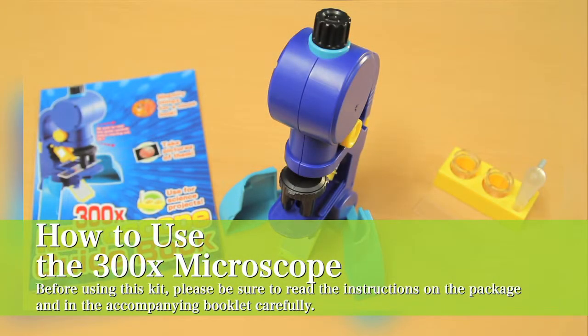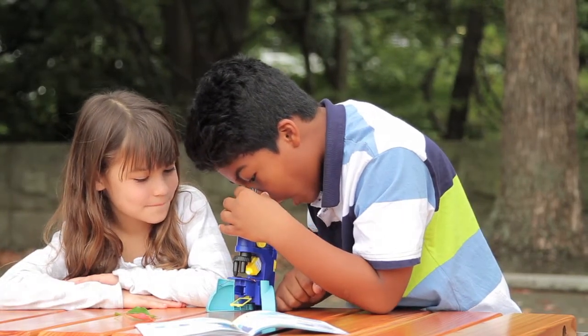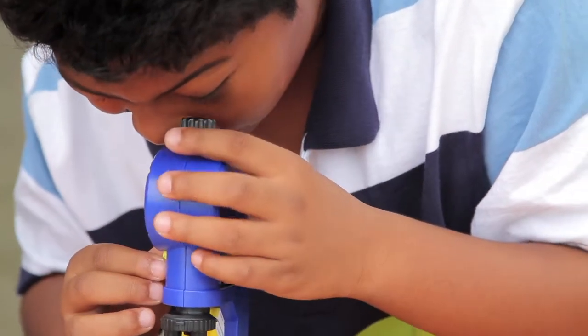How to use the 300x microscope. Using the object lens, you can see things at 50, 150, or 300 times their original size.